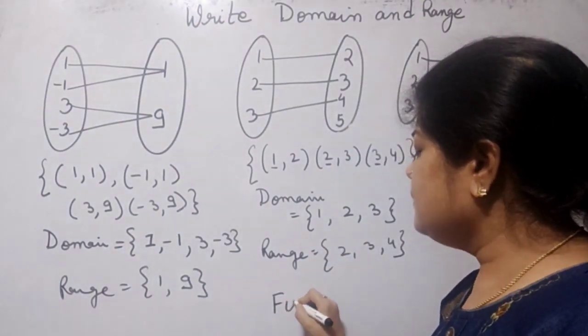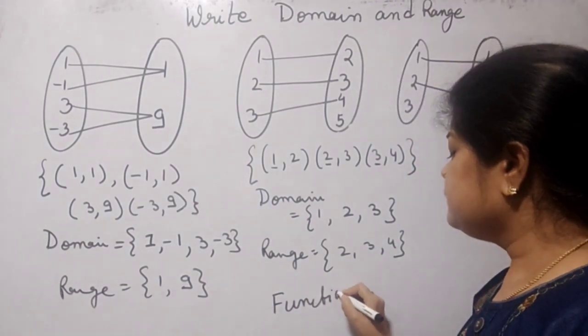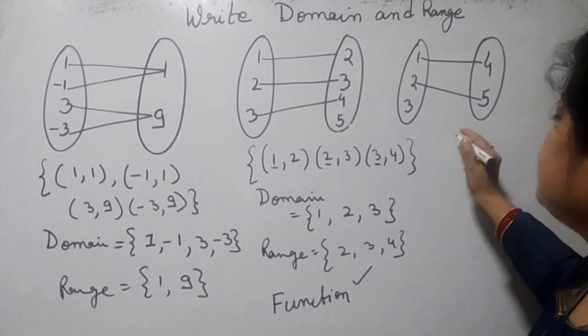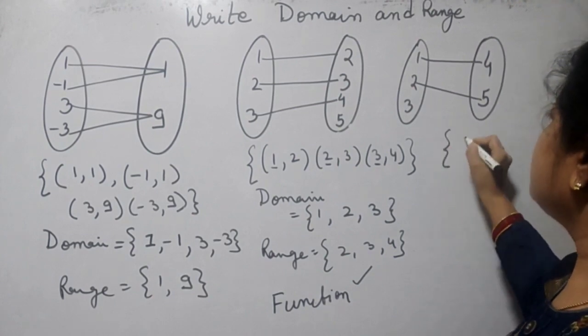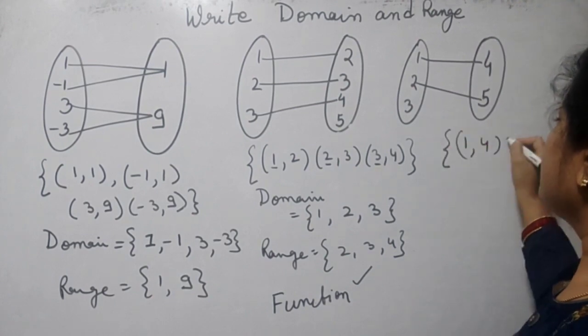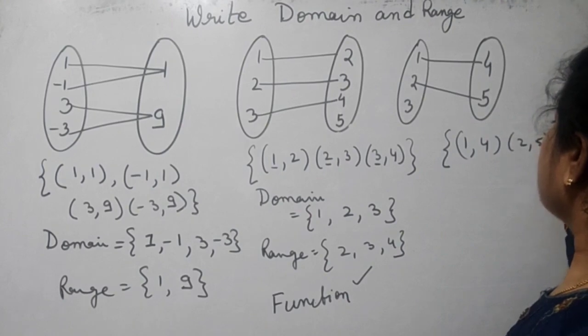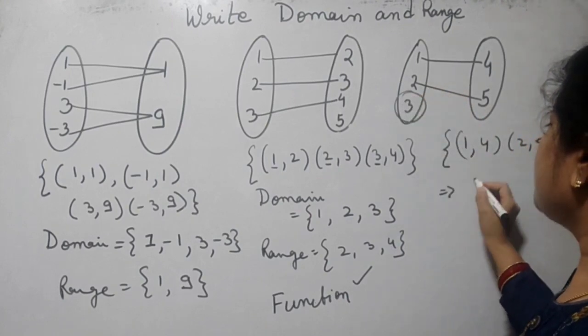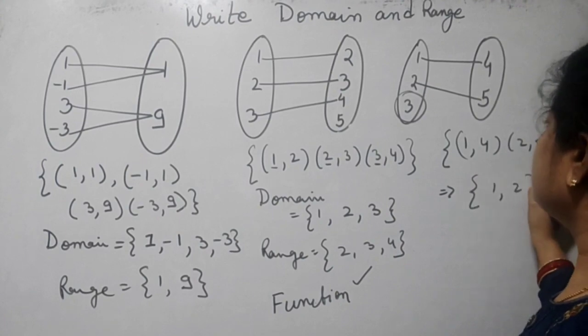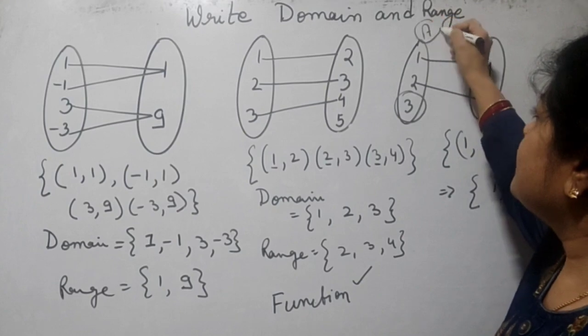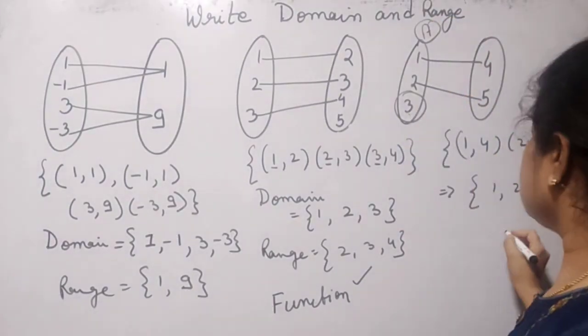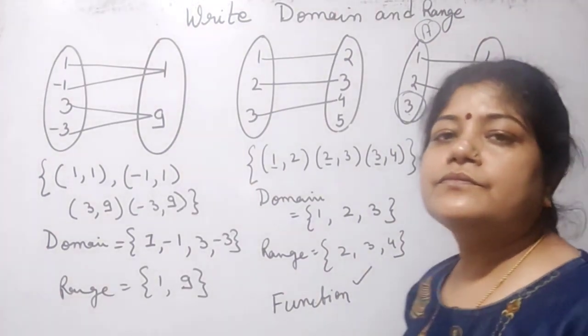So this is the function. Okay, now watch over the next case. Here we have the function 1 comma 4, 2 comma 5, but one element is left over here. Because domain becomes 1 comma 2, and in the domain this whole set A doesn't come - that is, 3 is left over here - so this is not the function.